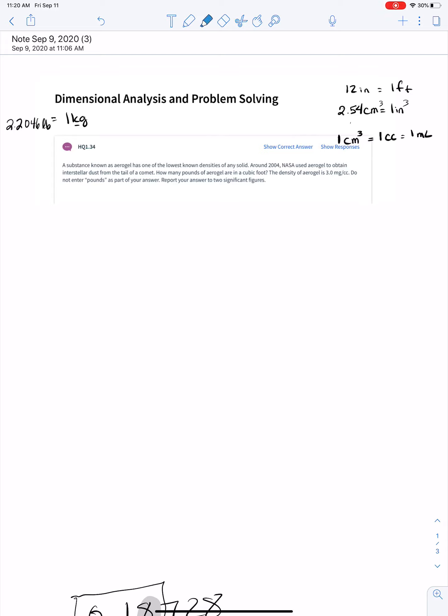So if you read this problem right here, this is the aerogel problem. It's super cool aerogel. But if you glance through the whole problem, besides there being a year in there, there's only one number. It's just 30 milligrams per cc. And you have to read the question carefully. It's telling you what it wants: pounds in a cubic foot.